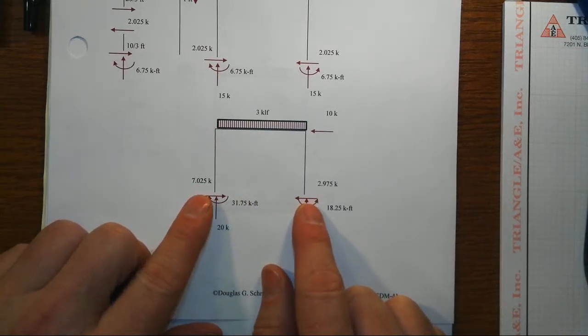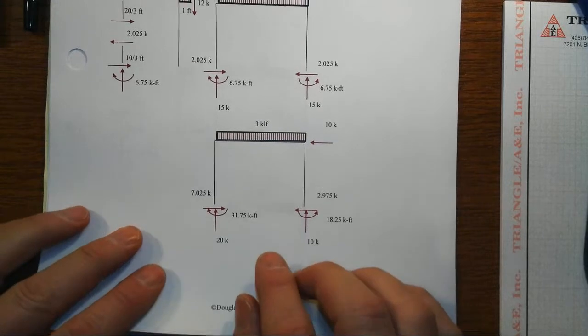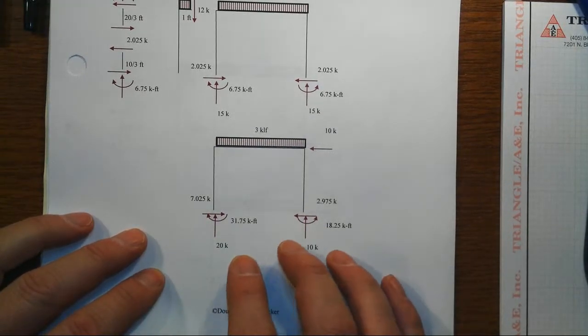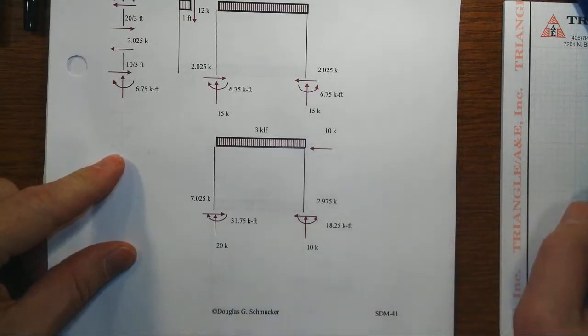The shears ended up not being distributed completely equally because of the gravity load effects. In a different series of videos, we'll go through an exact approach to this.